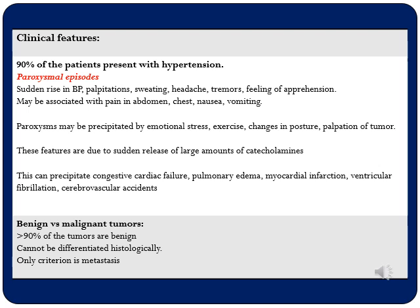The sudden release of catecholamines causes a sudden elevation in blood pressure that does not give the body time to adjust, leading to these catastrophic outcomes. Regarding benign versus malignant tumors, as discussed in the rule of 10, 90% of tumors will be benign and 10% can behave in a malignant fashion. This cannot be differentiated histologically — the only criterion for a malignant pheochromocytoma is when it metastasizes to other organs.